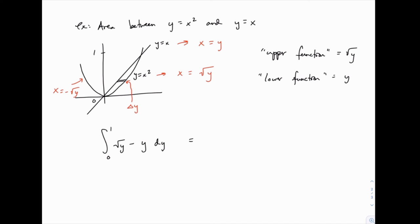To integrate the square root of y, you can think of it as y to the 1 half, which turns into 2 thirds y to the 3 halves, when you integrate. And when you integrate y, you get 1 half y squared. We can then plug in the limits of integration from 0 to 1. Plugging in 1 gives you 2 thirds minus 1 half. And plugging in 0 gives you 0 minus 0. So it all works out to 1 sixth, which of course is the same value we got earlier for the area. The area hasn't changed. We just approached it a different way.